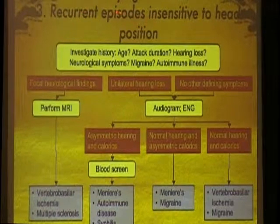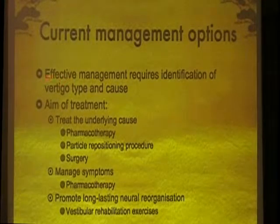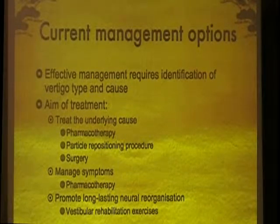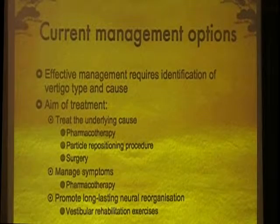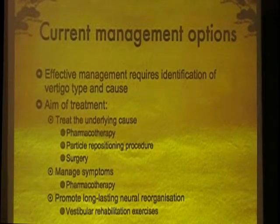In terms of recurrent episodes and insensitivity to head movement, think of possible vascular causes. The important management option is: first, know the real cause of your vertigo. The most important question is — is it peripheral or central? If you have ruled out central, you can give any of your preferred medications for dizziness. Because if it's central and it's a tumor, that is what you need to address. Treat the underlying cause. The particle repositioning procedure — what we call vestibular exercises — is the number one treatment.